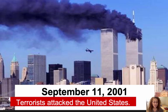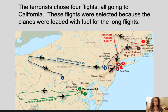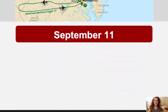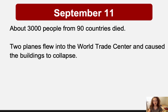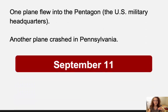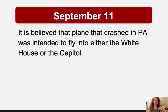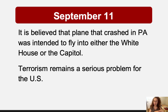One more thing before we go — we need to talk about September 11, 2001. On that day, four planes flying out of U.S. airports were taken over by terrorists. The terrorists chose four flights all going to California because the planes were loaded with fuel for the long flights. About 3,000 people from 90 countries died. Two planes flew into the World Trade Center and caused the buildings to collapse. One plane flew into the Pentagon, the U.S. military headquarters. Another plane crashed in Pennsylvania — it is believed it was intended to fly into either the White House or the Capitol building. Terrorism remains a serious problem in the United States.